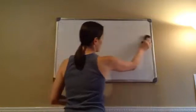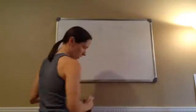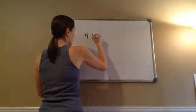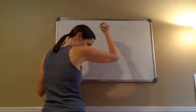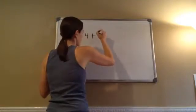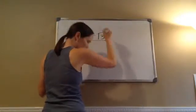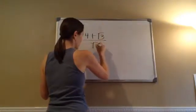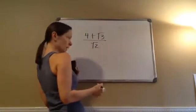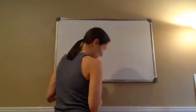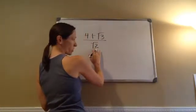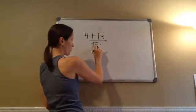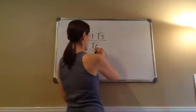Let's do a few more because they're going to get harder each time. Here we go: 4 plus square root of 3, all over square root of 2. Again, they want us to simplify this, so we want to try to get rid of the square root of 2 in the denominator.